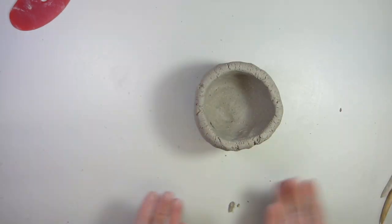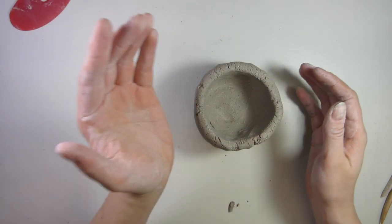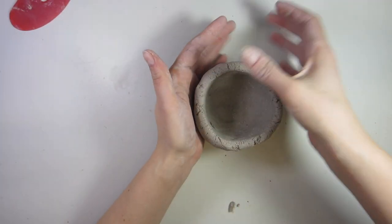Okay, now you can see that my pot is looking a little bit more like a pot. I need to compress the edge to make sure that it doesn't crack.